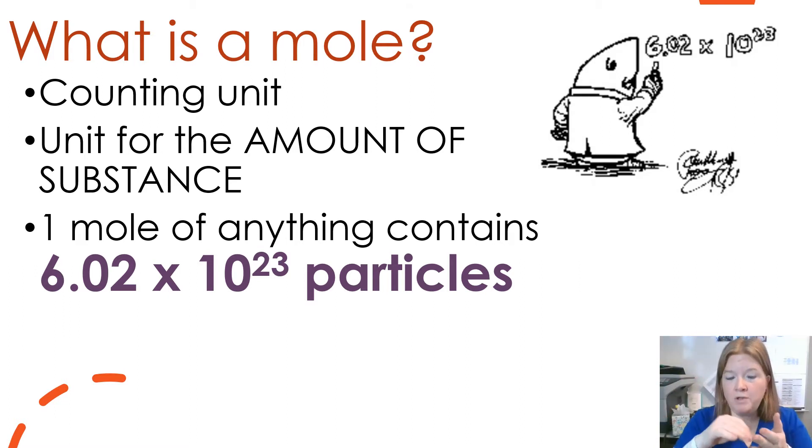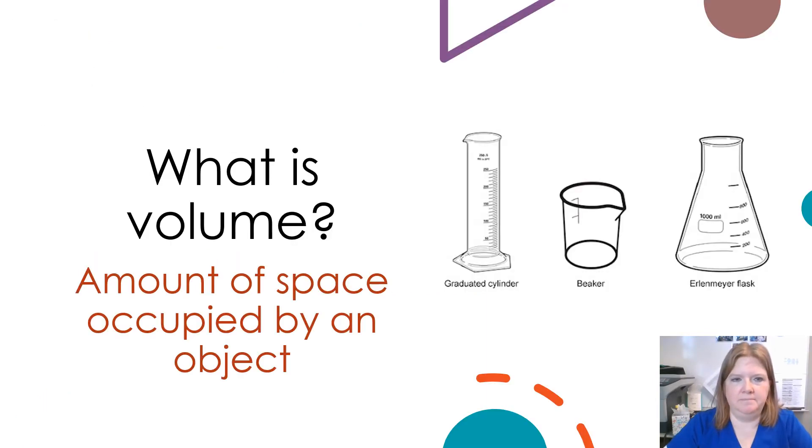Okay, to get to a mole, you'd have to keep counting 1, 2, 3, all the way to 6.02 times 10 to the 23rd. And then you'd say, that's a mole. So it's a big, big, big number. What is volume? Volume is the amount of space occupied by an object.